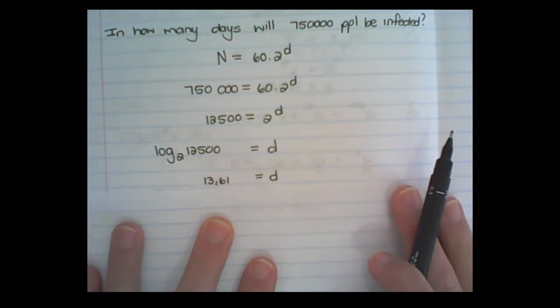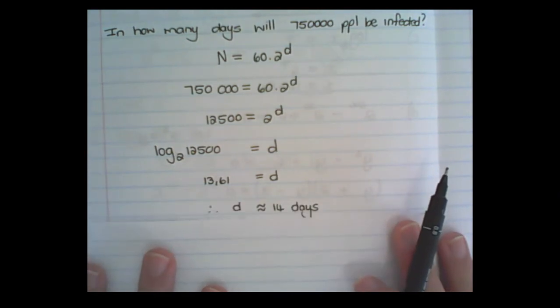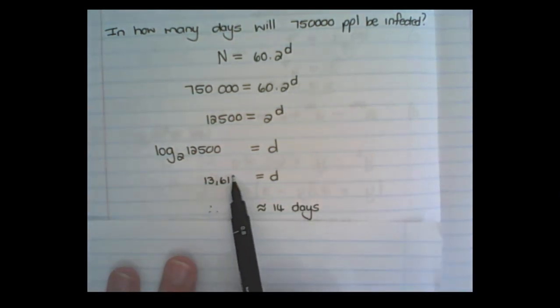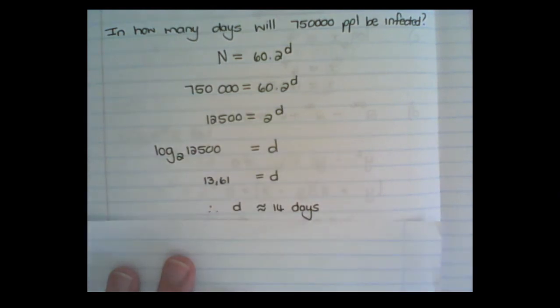Putting that into my calculator, I find d is 13.61, which then means 14 days. So it's 13 days and part of the 14th day. So within 14 days, 750,000 people would be infected.